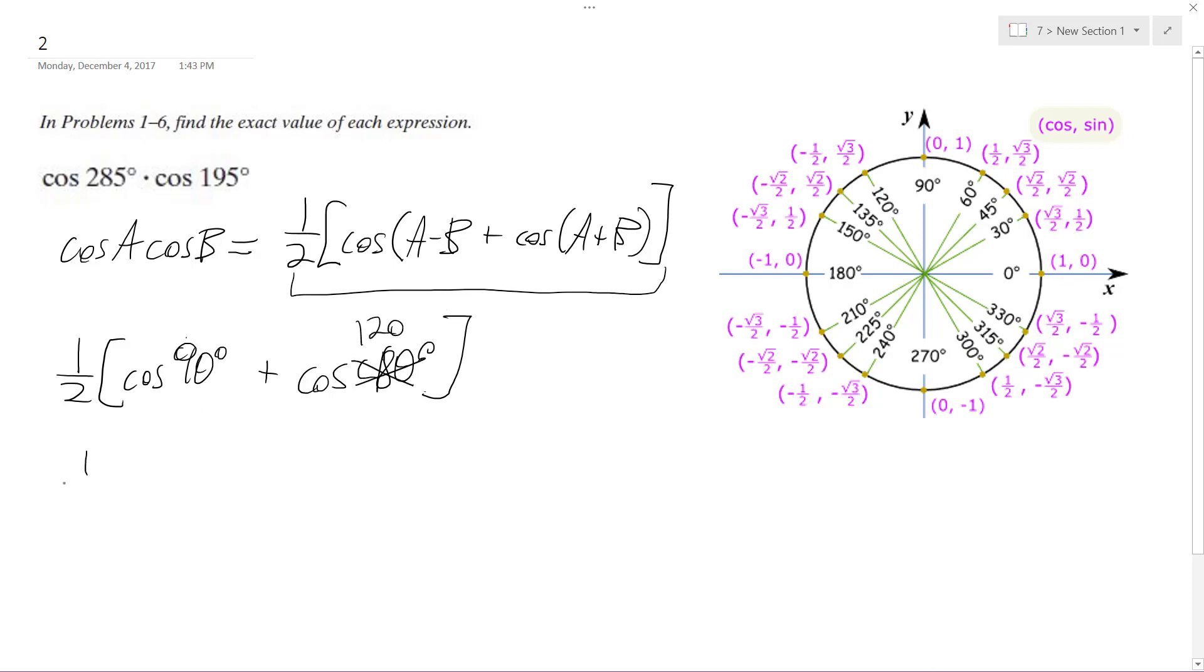Alright, so the cosine of 90 degrees up here is zero plus 120, which is equal to negative one half, so ultimately what we have is one half times negative one half, which is equal to negative one fourth.